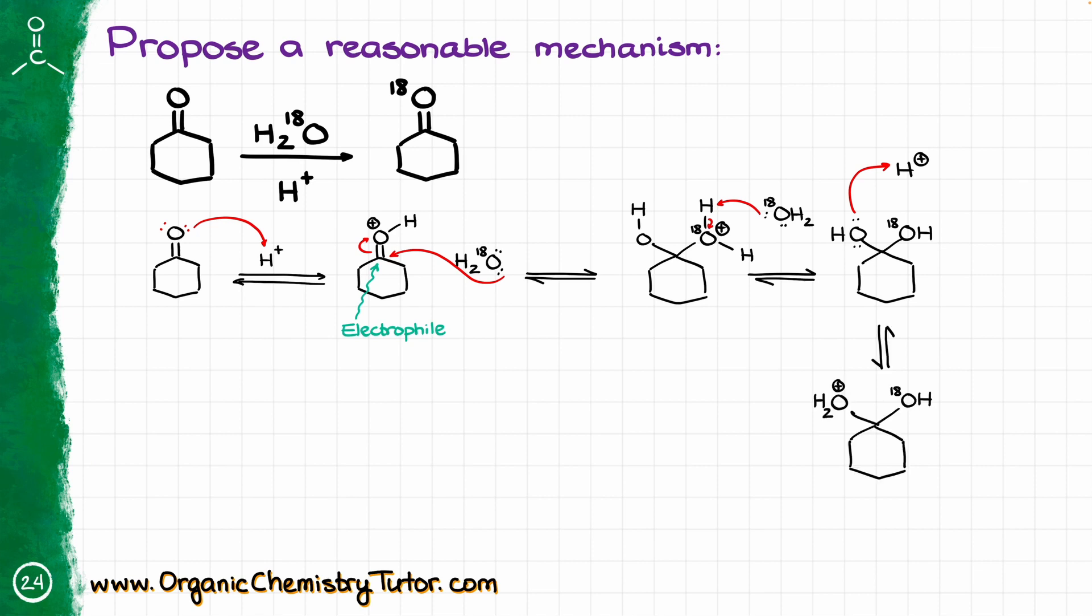Now, that's going to give me a new protonated species which, with the help of my heavy oxygen, is going to get rid of our leaving group, like this, giving me a protonated cyclohexanone with the heavy oxygen.